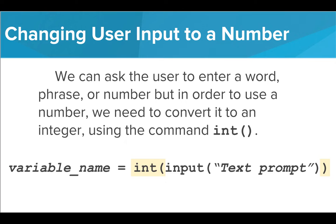If we try to use the input command to get a number from the user and use it as a number in our code, Tracy will give us an error. This is because Tracy reads everything a user enters as a word by default.